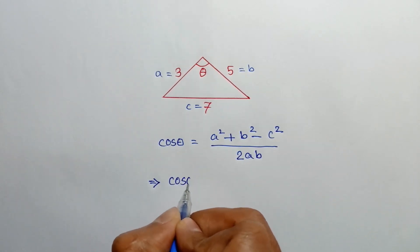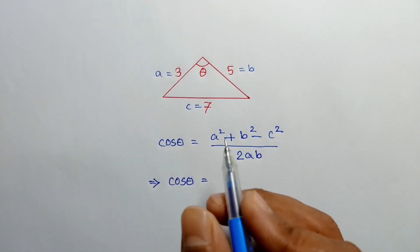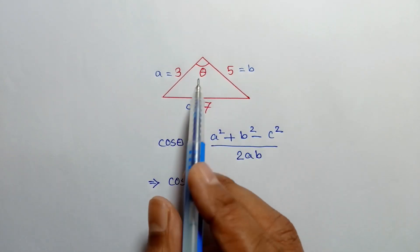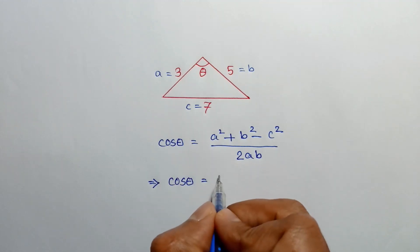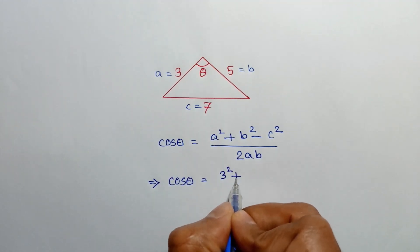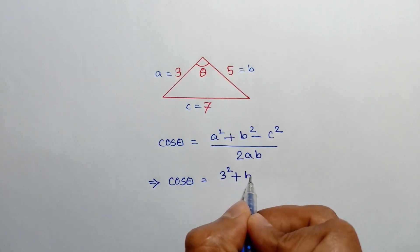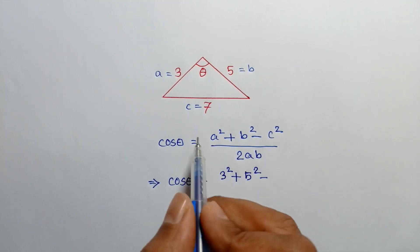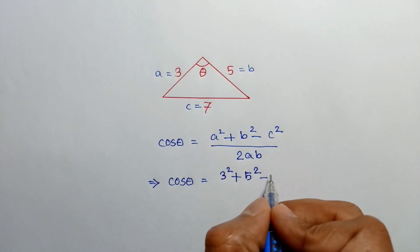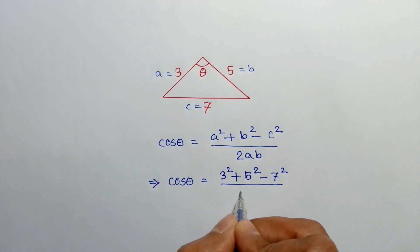Or cos theta is equal to, substituting the value of A, B, C. From here we can write value of A is equal to 3, so 3 square plus value of B is 5, so substituting the value of B 5 here we can write 5 square minus the value of C is 7, so 7 square over 2 times value of A is 3 and value of B is 5.